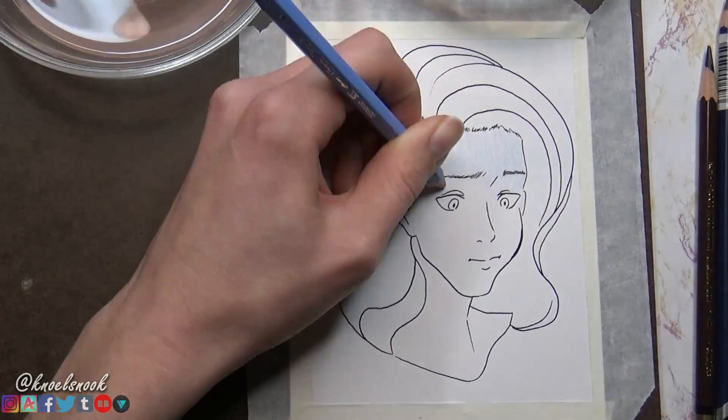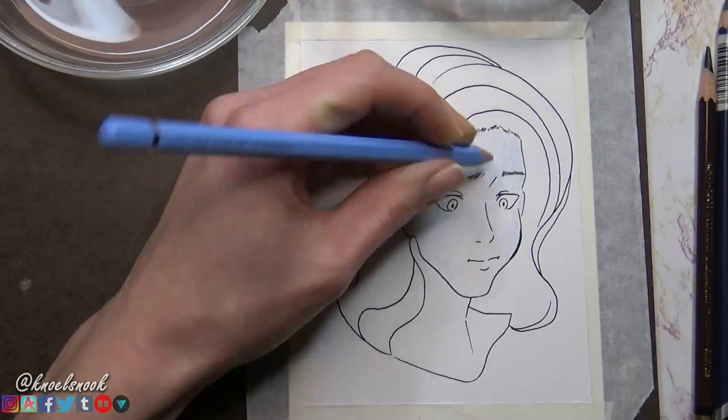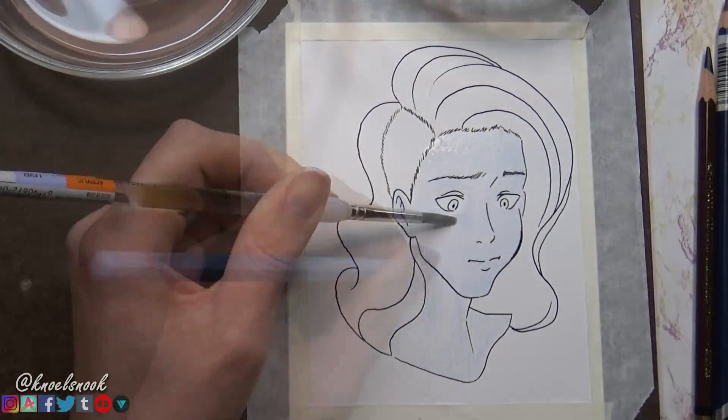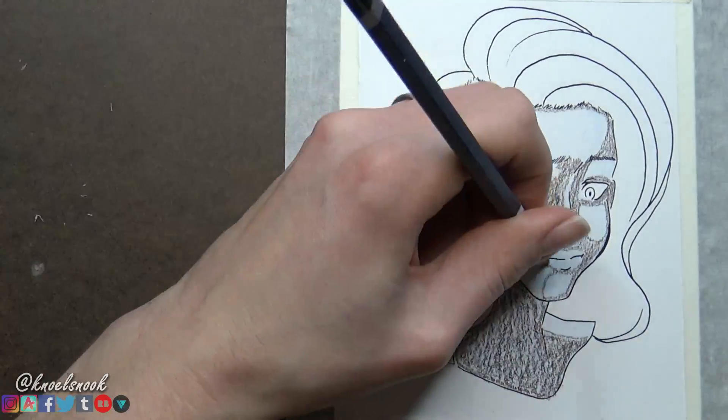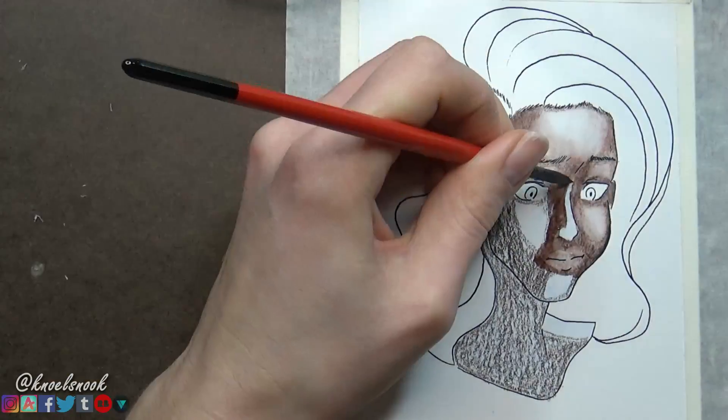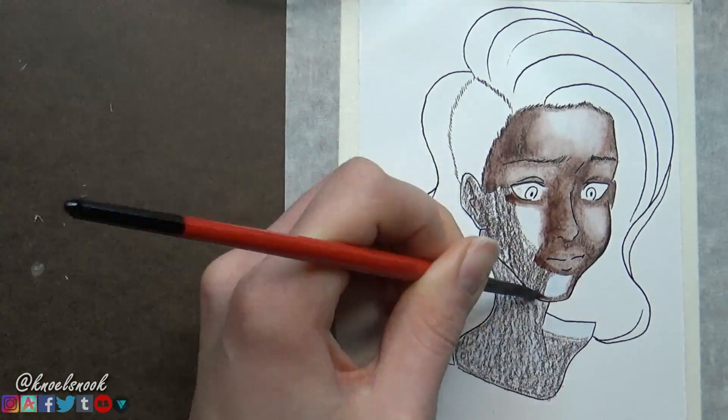Hello everyone, it's Noelle back with our 16th out of 100 original characters. Today's OC is Kai, who is an androgynous character done in watercolor pencil who sports a cool deep skin tone and blue hair.